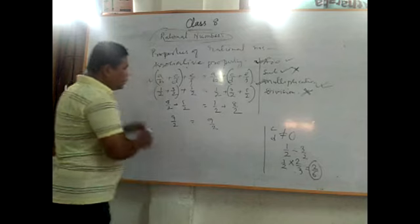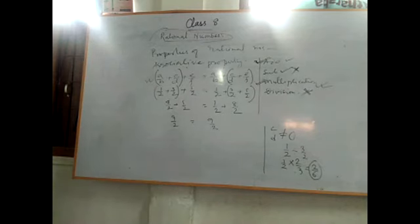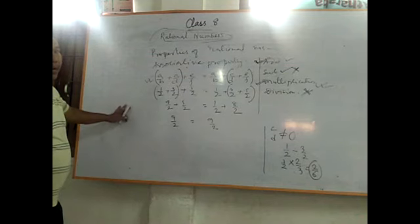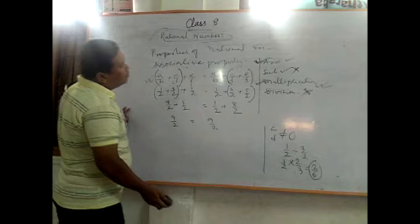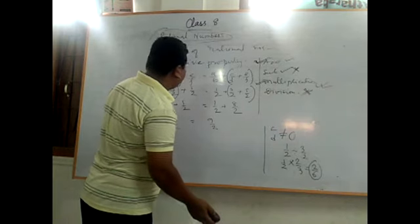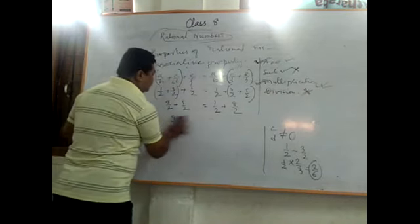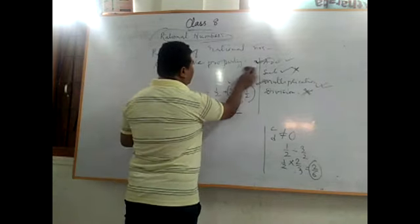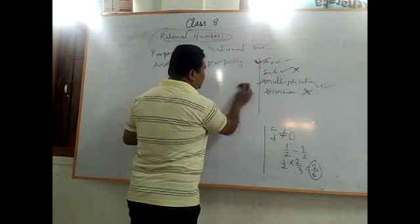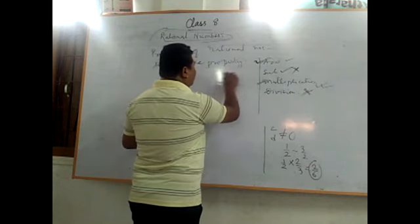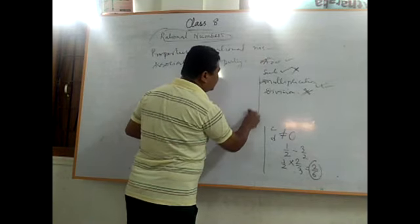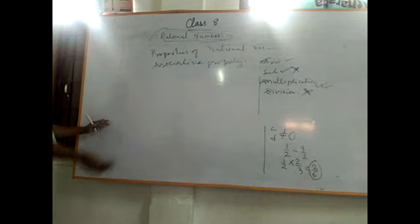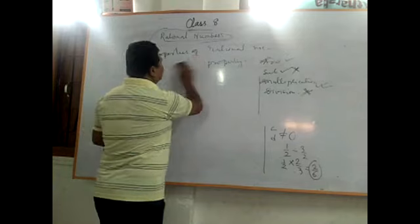Associative property on subtraction is not applicable — you can check this yourself. Associative property on multiplication is applicable, and on division it is not applicable — you can verify these on your own.